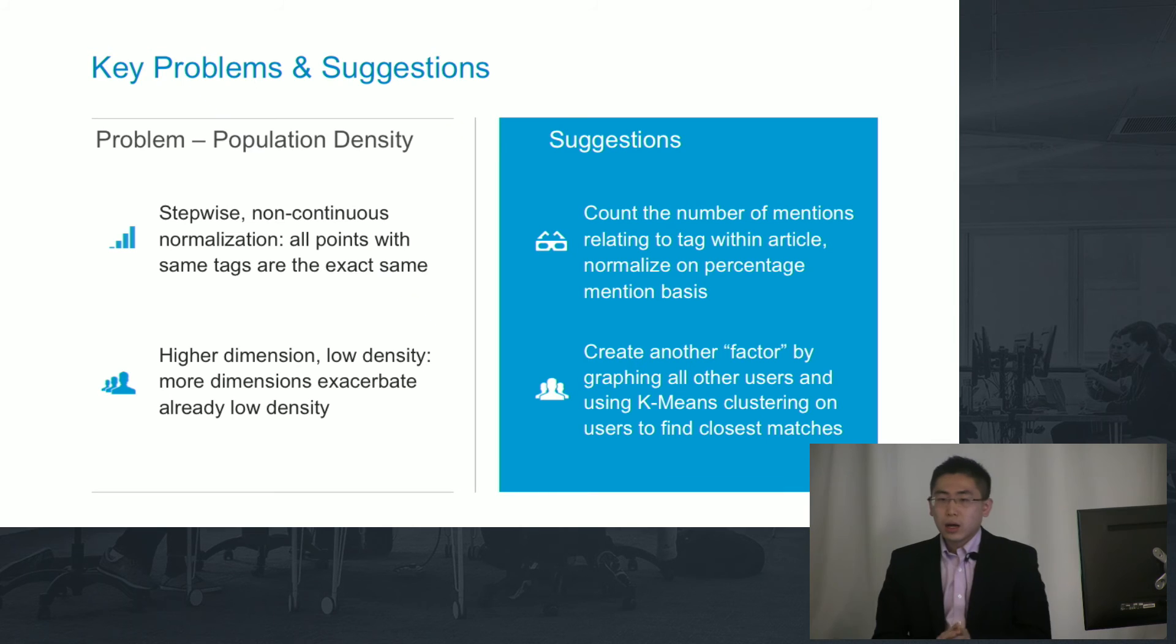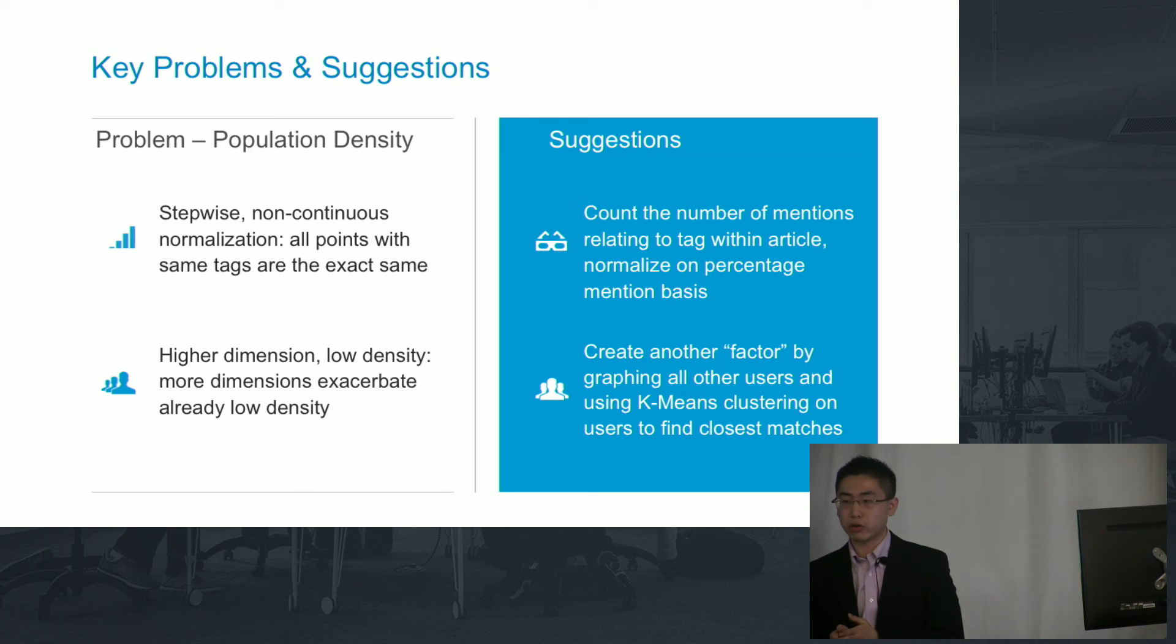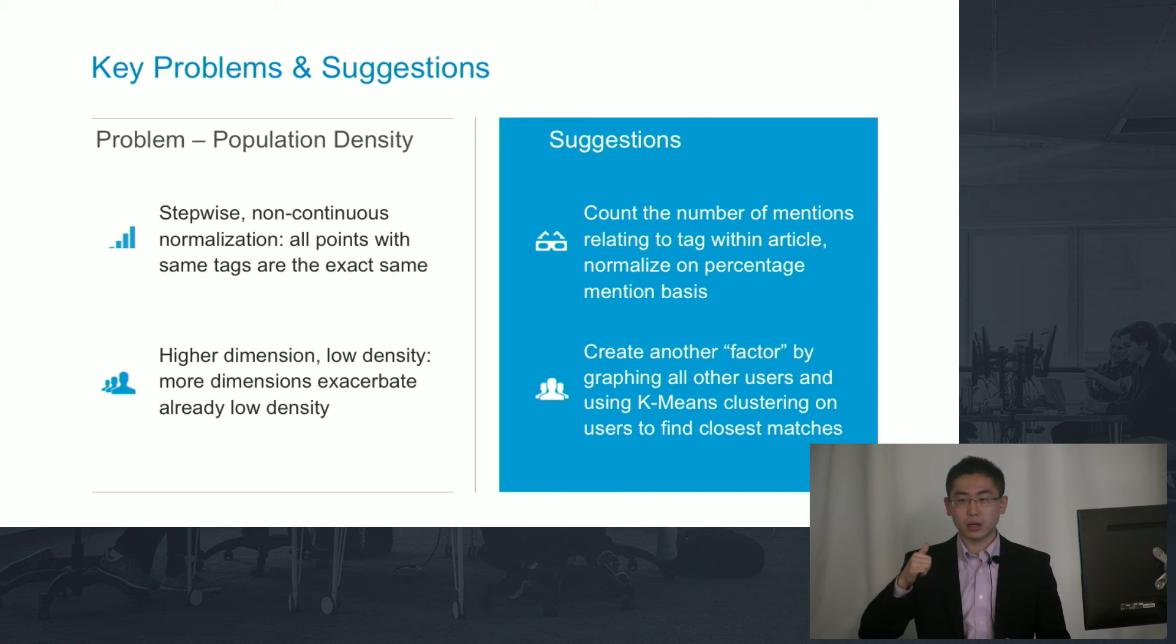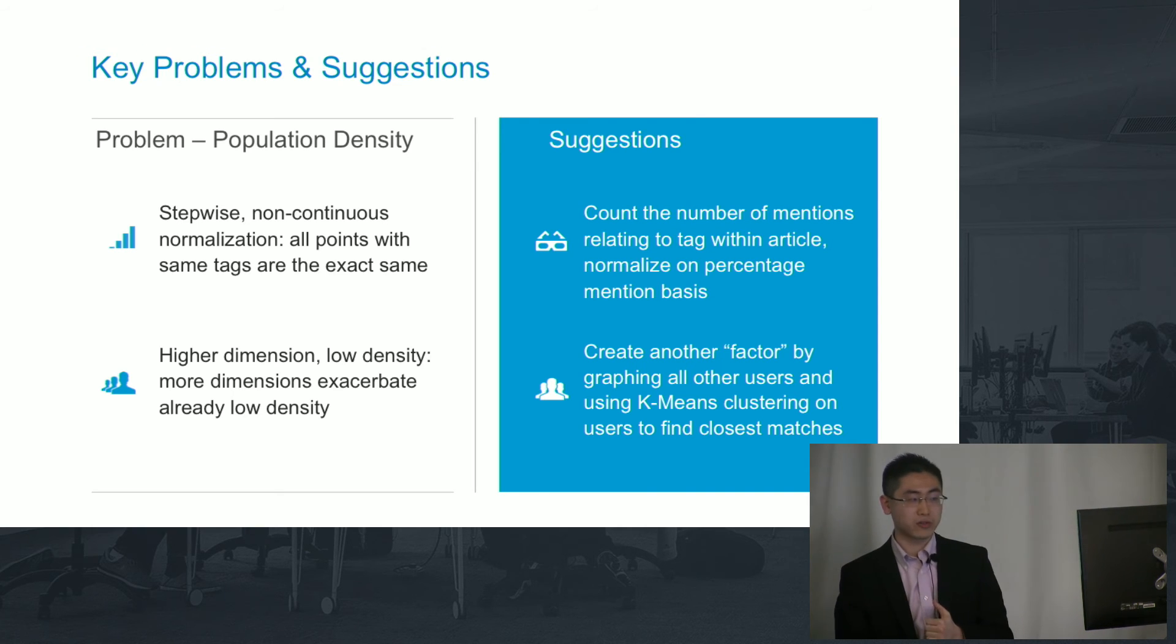And so, getting to the issues of what I had done, namely KNN, because we thought it was a fairly successful algorithm, but there are a couple of issues, namely population density. First, the problem is it's a stepwise function, non-continuous.